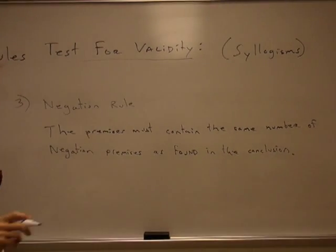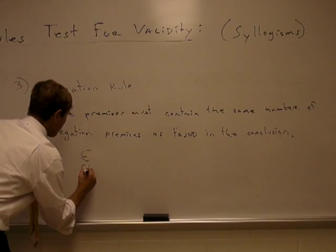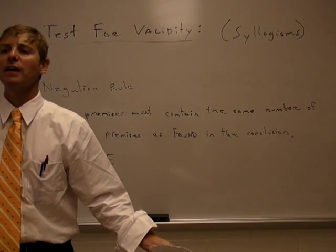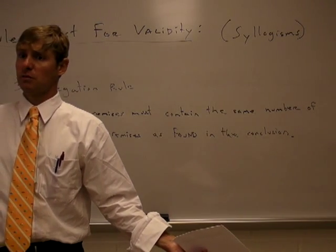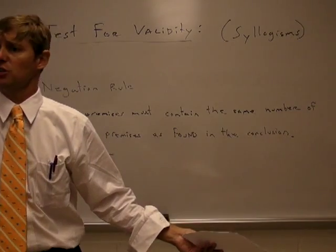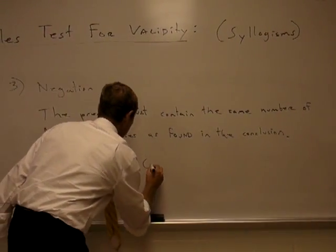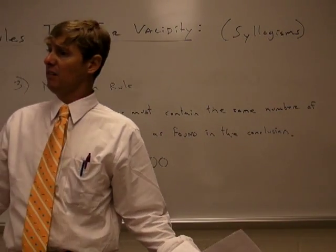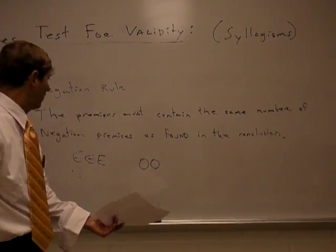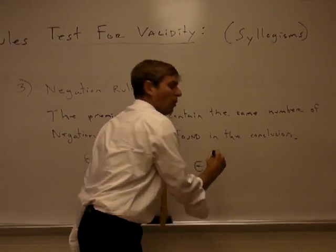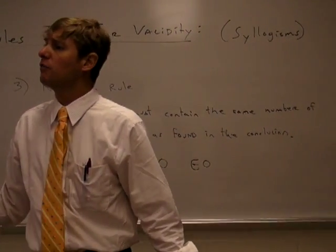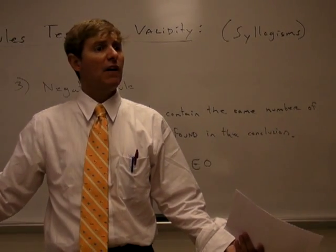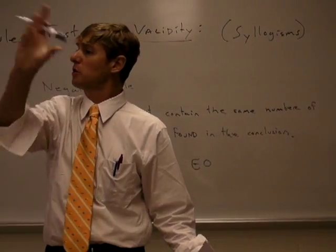For example, if somebody gives you an E-E-E syllogism, you'll automatically know it's invalid because two of the premises are negations. If the premises are O-O, that's automatically invalid. E-O or O-E are automatically invalid. A-A-E is invalid because we have a negation as the conclusion but two affirmations.